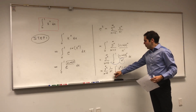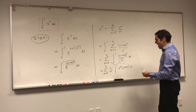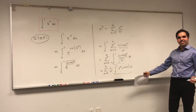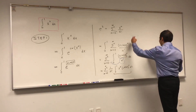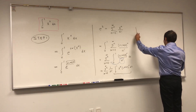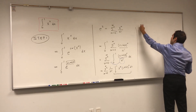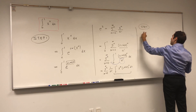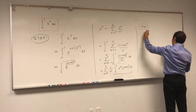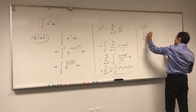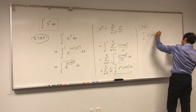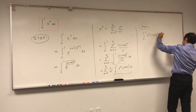We are just left to evaluating this integral. Step two: let's evaluate the integral from zero to one of x to the n times ln of x to the n dx.